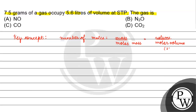Molar volume is 22.4 liters per mole. In this question, the mass of the gas has been given as 7.5 grams, and we need to find the molar mass. The volume given is 5.6 liters, and molar volume is 22.4 liters per mole.